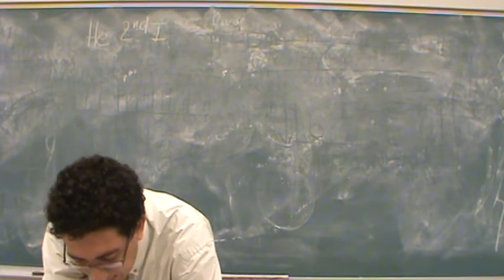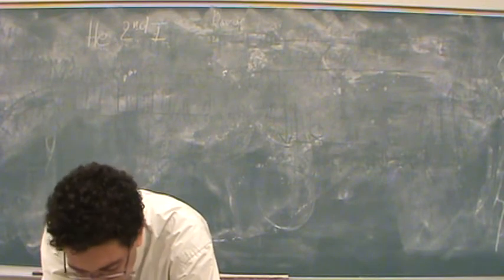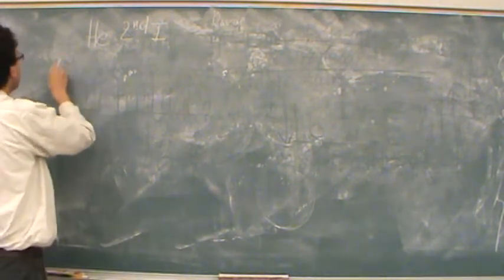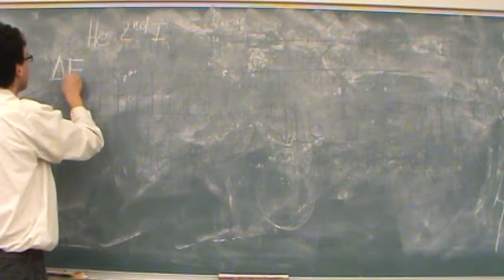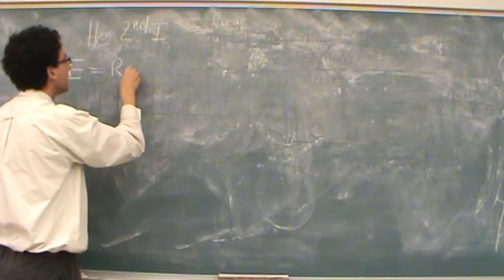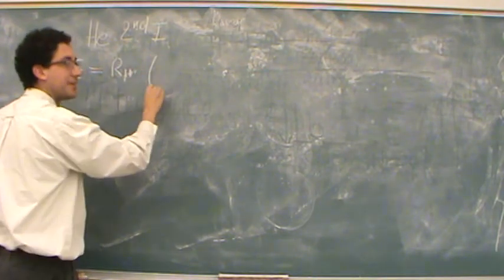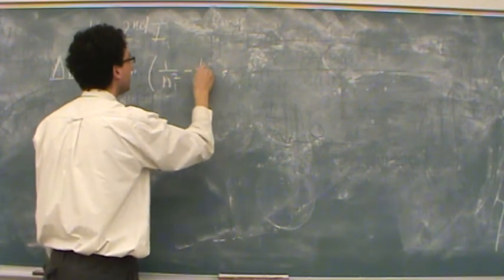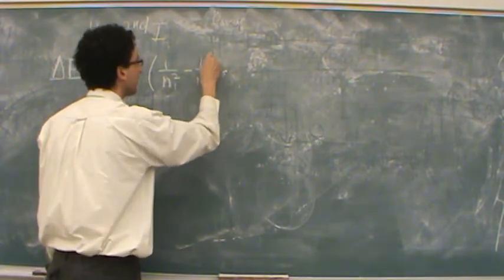And then there's going to be another issue with it, or something I didn't mention from it. So, change in energy is a Rydberg constant. I'm going to put a little space here. 1 over n initial squared minus 1 over n final squared.